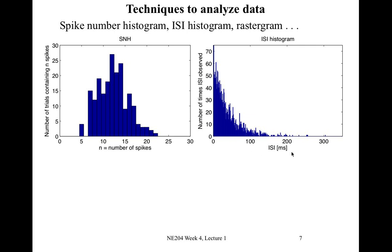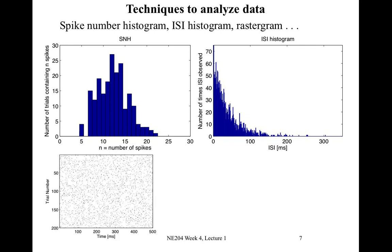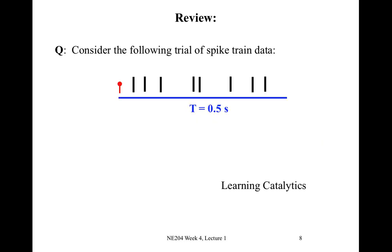While for the ISI histogram, we have the quantity we're interested in, the ISIs in milliseconds, and then the number of times we observed that ISI. So we have graphical ways of looking at these spike train data. We can also plot things like the rastogram, which is shown here in the lower left of this figure, and other numeric summaries which we discussed.